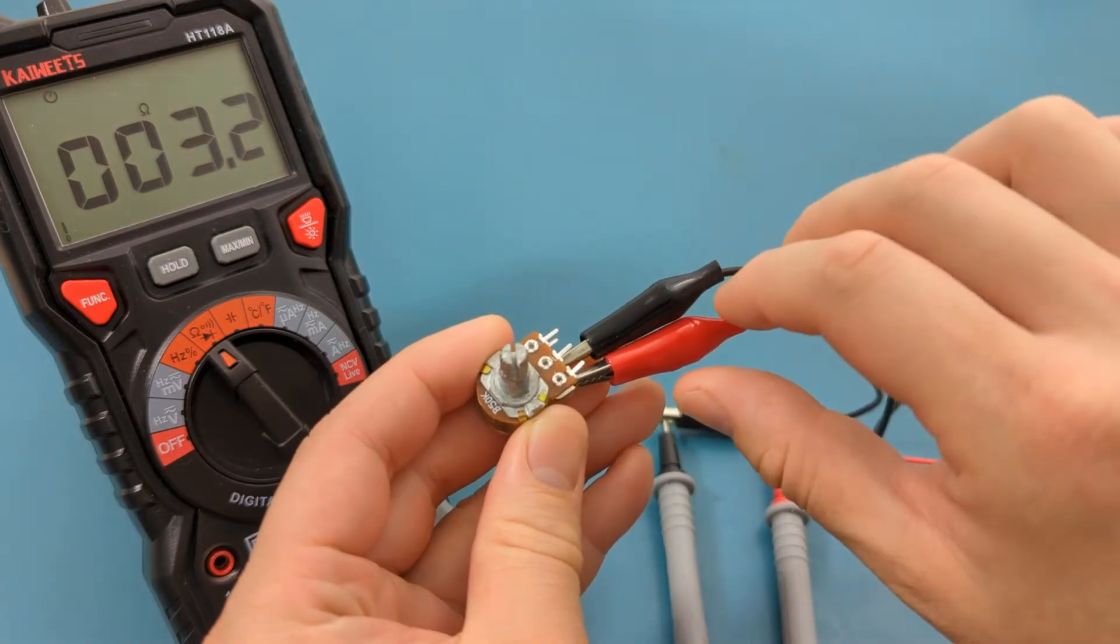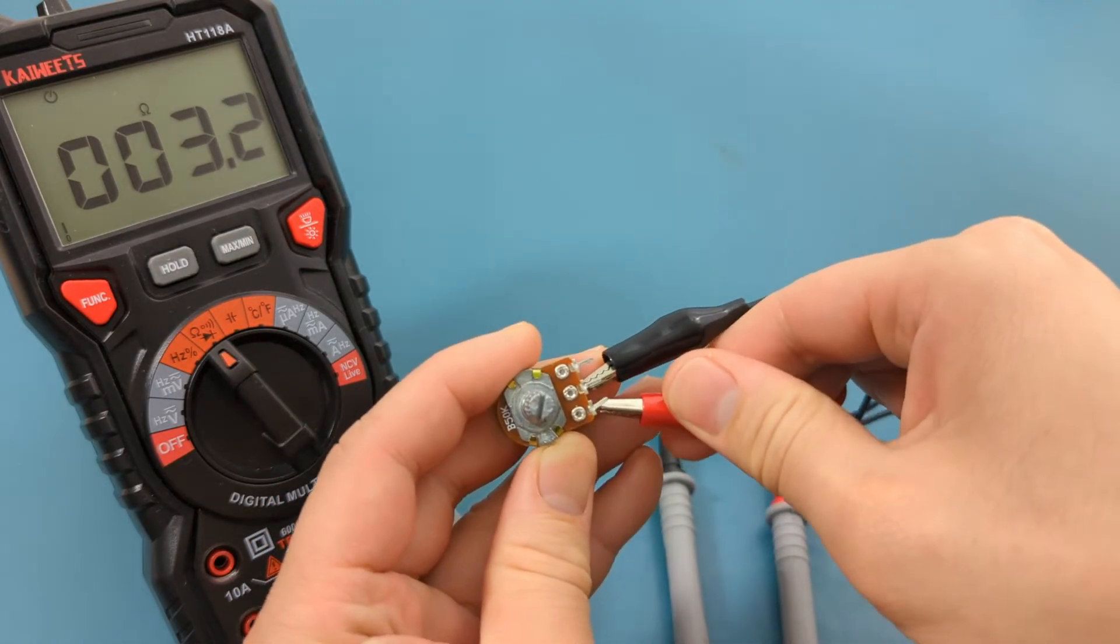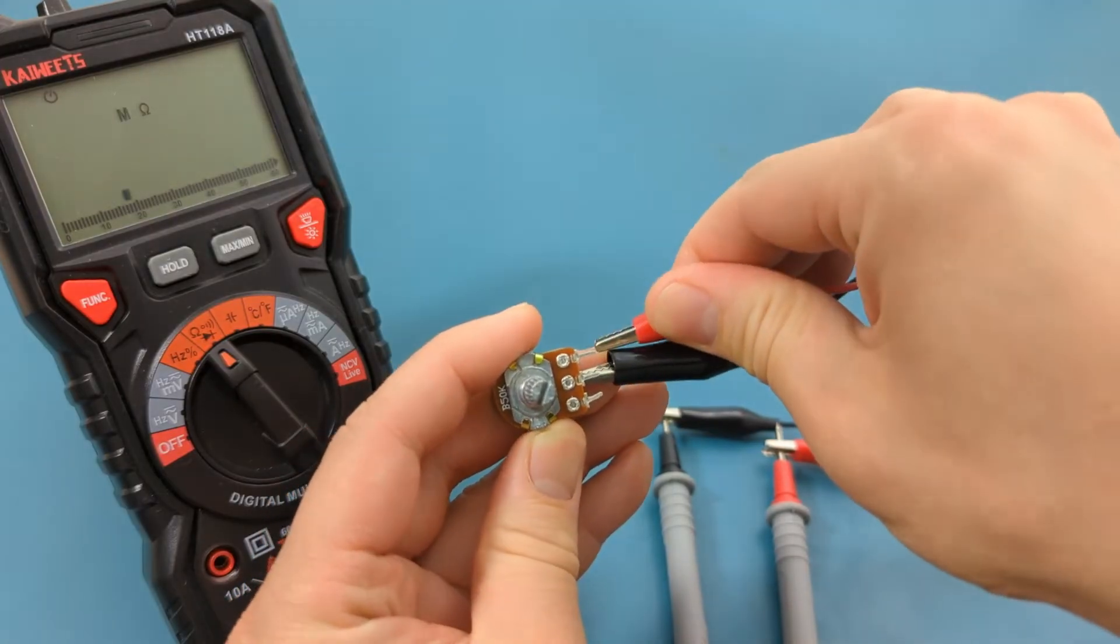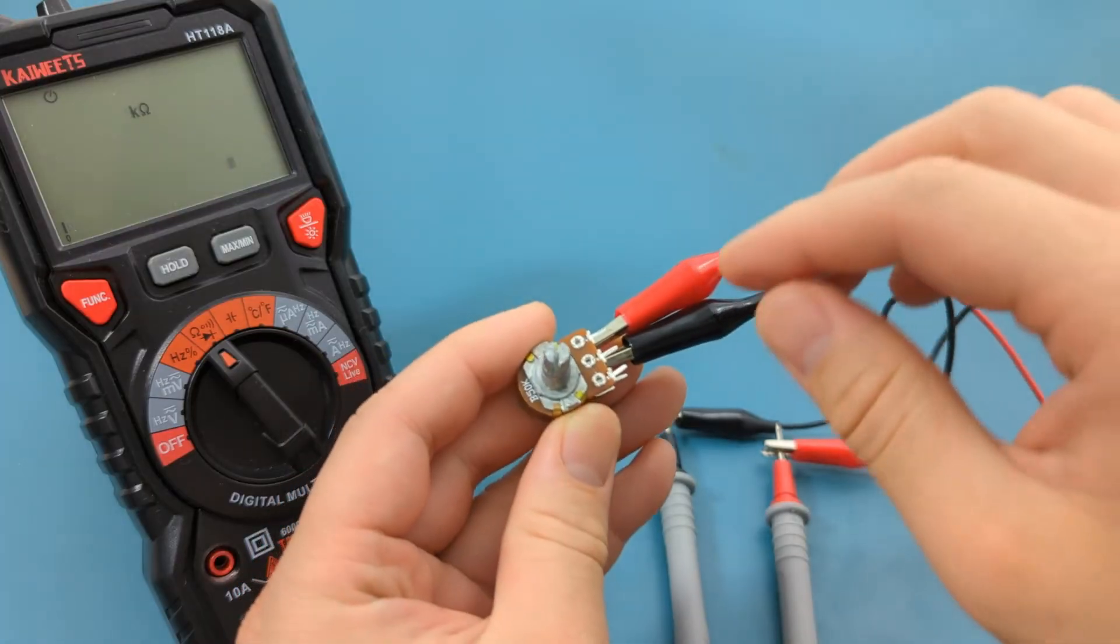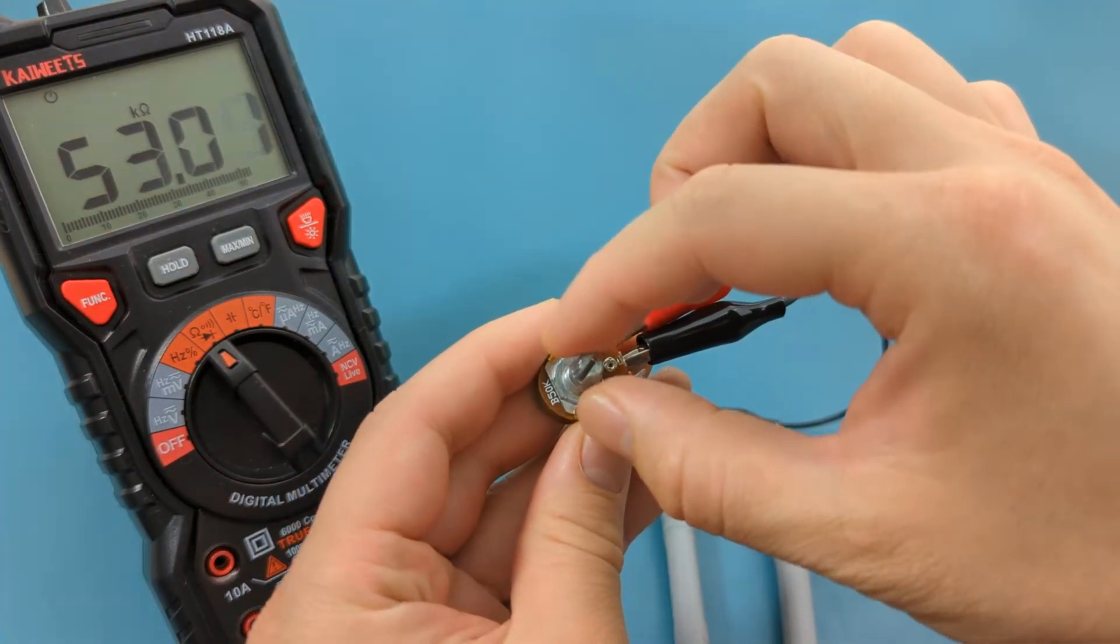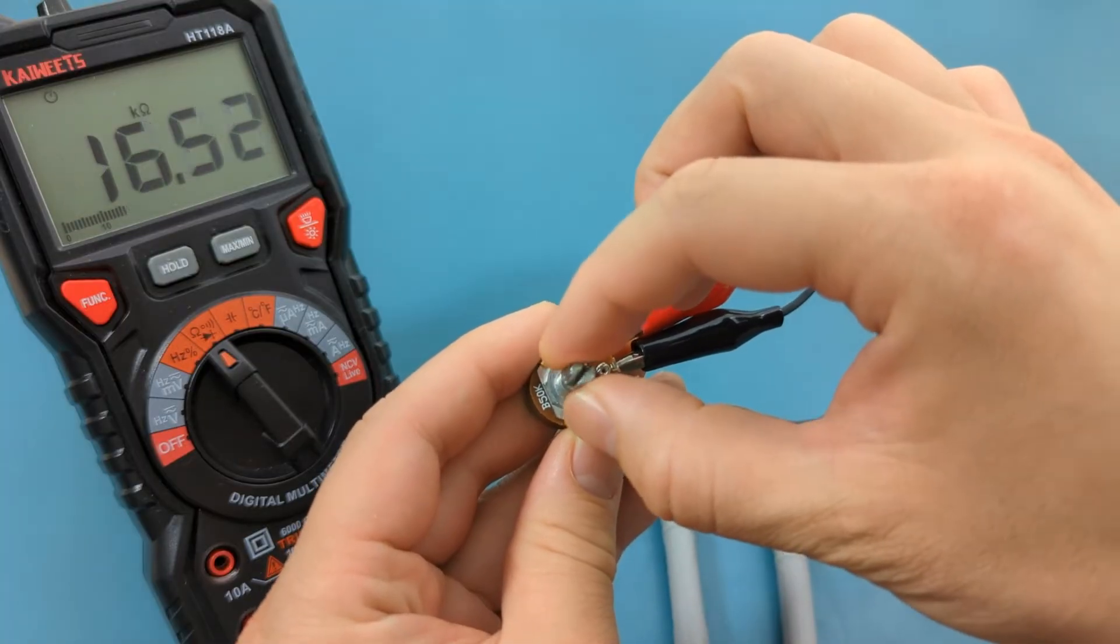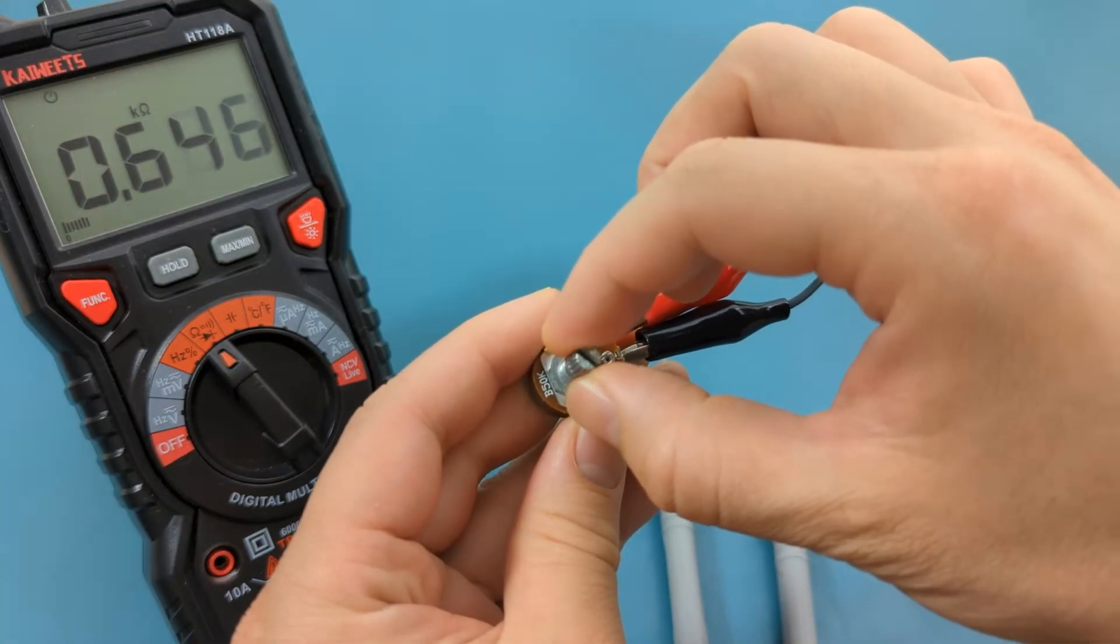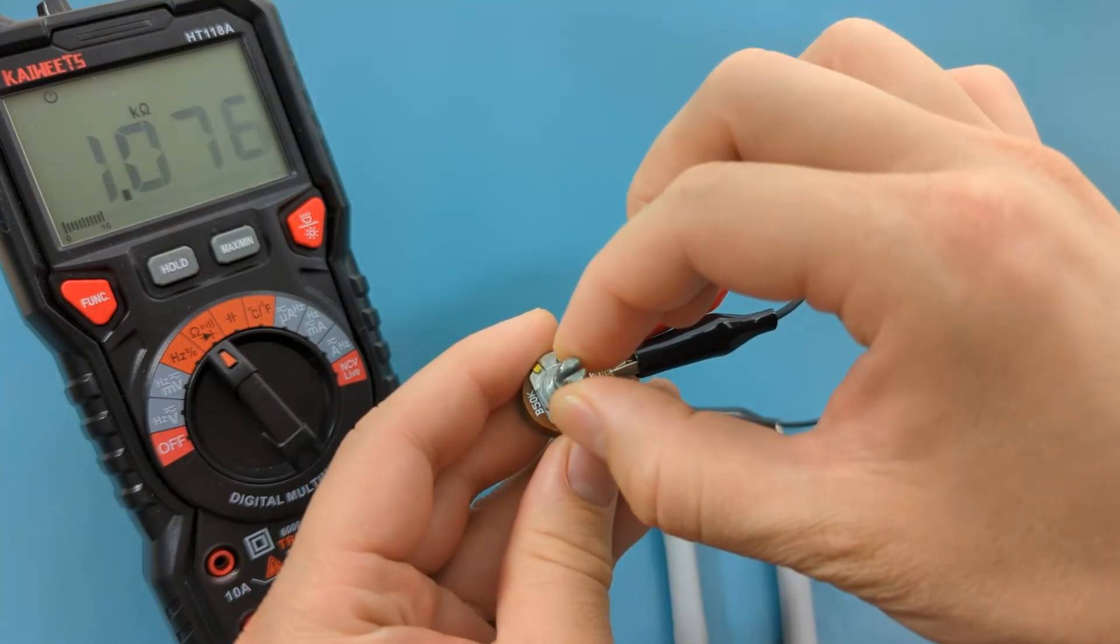Now let's move the red alligator clip from the left terminal to the right terminal. In this configuration, everything should be the opposite. When you turn the dial clockwise, the value of the resistance decreases. When you turn the dial counterclockwise, the resistance value increases.